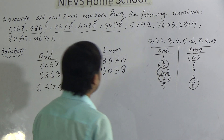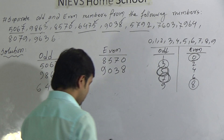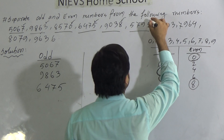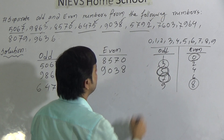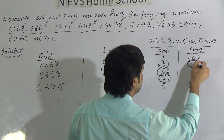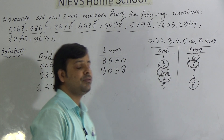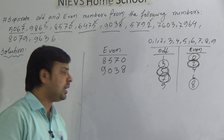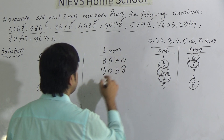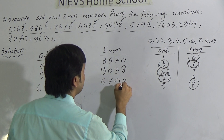Now go to the next number: 5792. Here the unit place is 2, and we know the digit 2 is even. So the unit place of the number 5792 is even, meaning the number is even. We write 5792 under even.